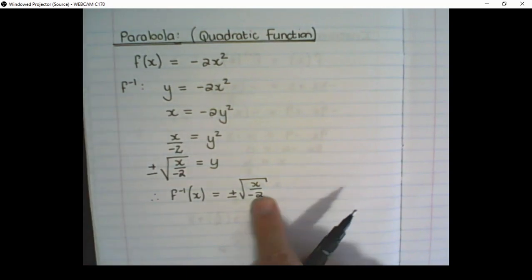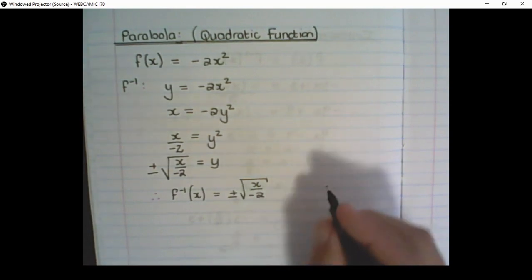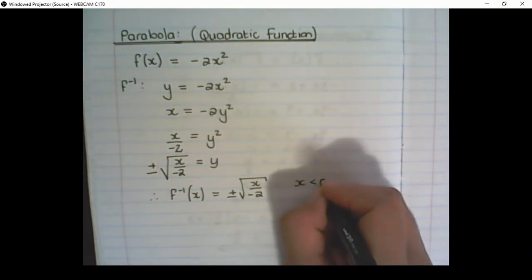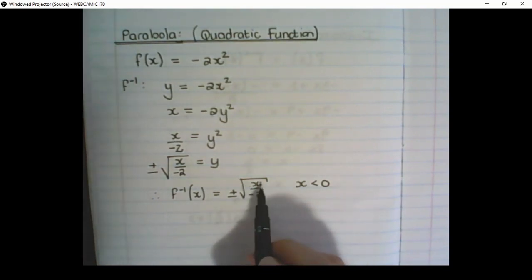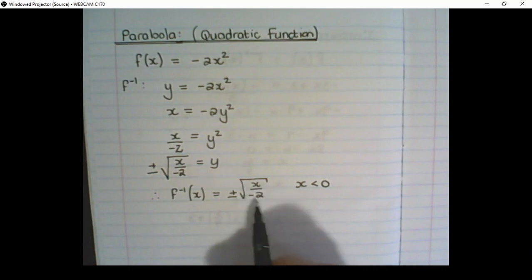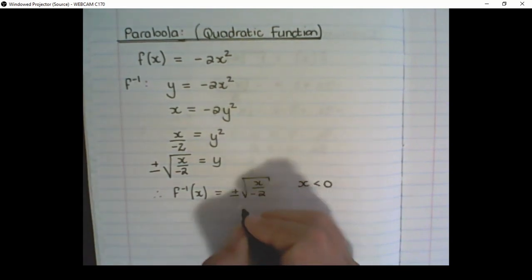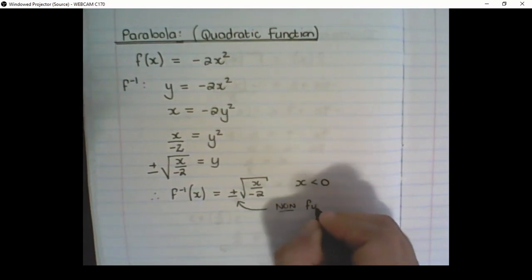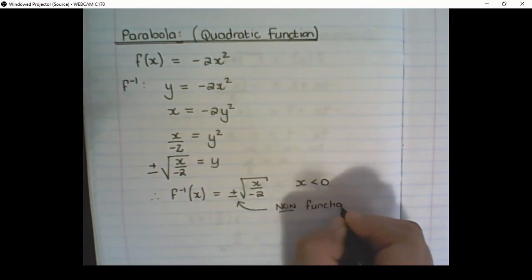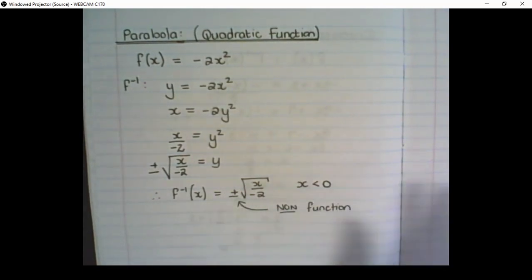There is a restriction on this. For the square root to be valid, x needs to be smaller than 0. If x is a negative number, then the value inside the square root will always be positive. We also stated in the previous lesson that this is a non-function, and we are going to put restrictions on it in later lessons.